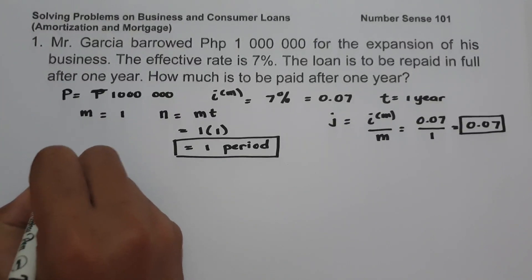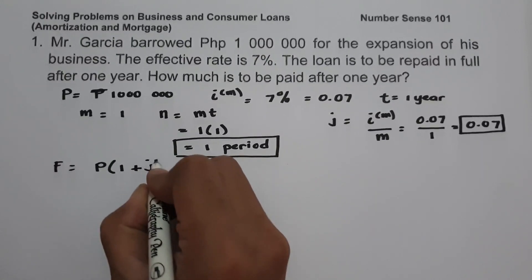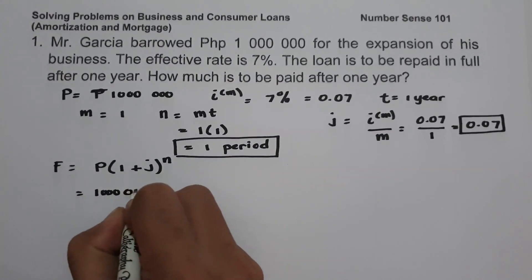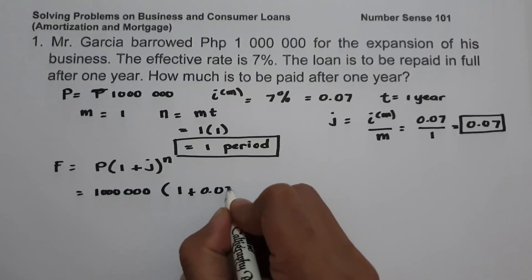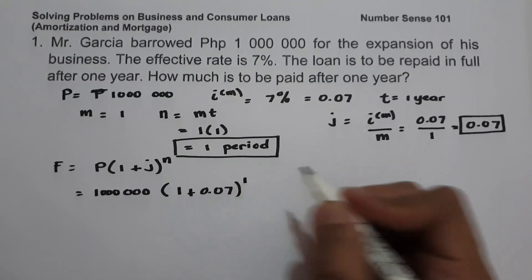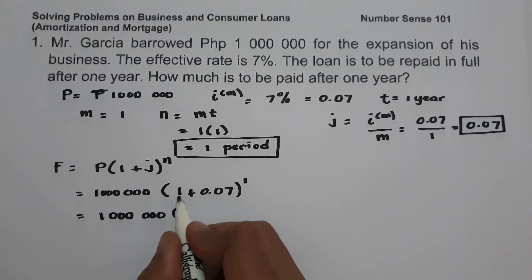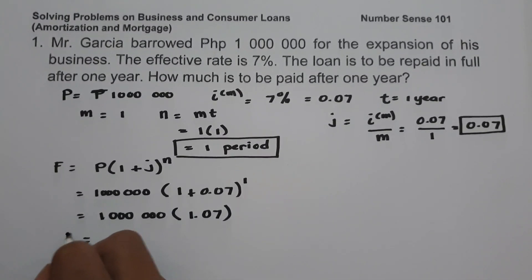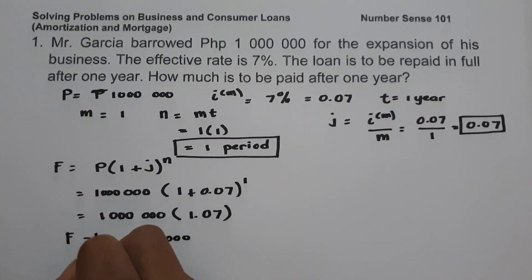To determine how much is to be paid after one year, we use the future value formula: FV = PV × (1 + j)^n. Substituting: FV = 1,000,000 × (1 + 0.07)^1 = 1,000,000 × 1.07 = 1,070,000 pesos. So the answer is 1,070,000 pesos.